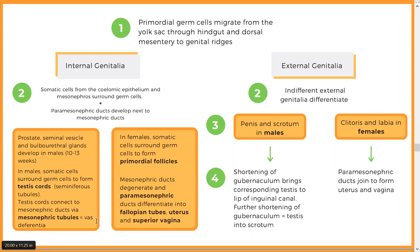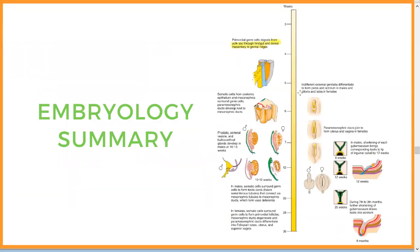The mesonephric tubules become the vas deferens. In females, somatic cells surround what will become primordial follicles. The mesonephric and paramesonephric ducts become the fallopian tubes, uterus, and superior vagina. For external genitalia, shortening of the gubernaculum brings the testes into the scrotum, and the paramesonephric duct joins to form the uterus and vagina.